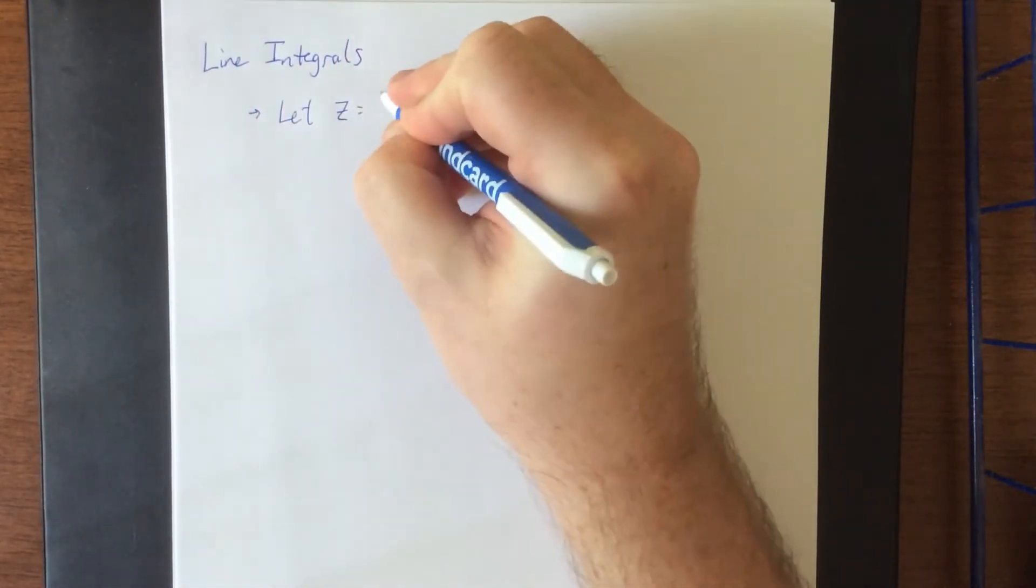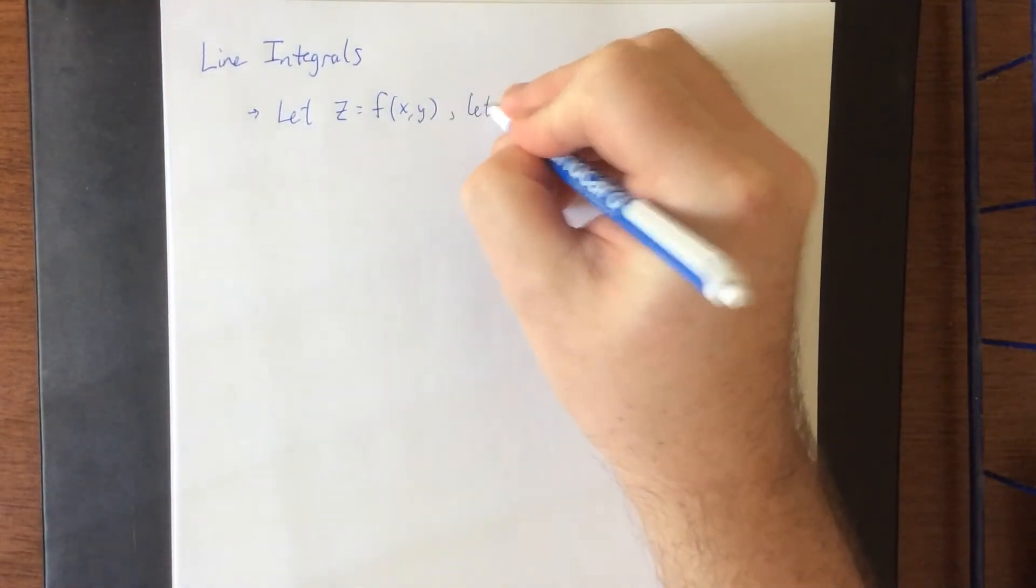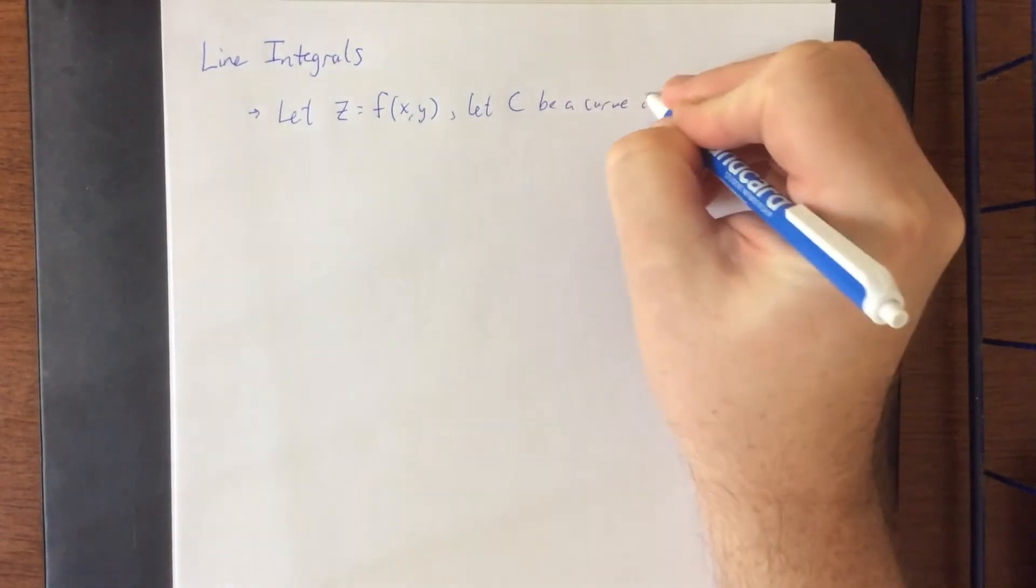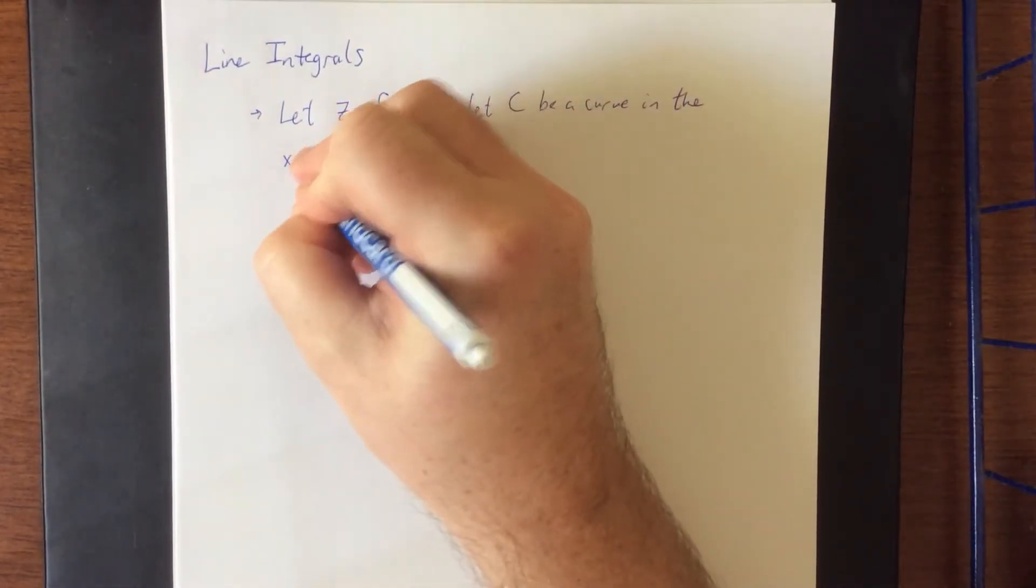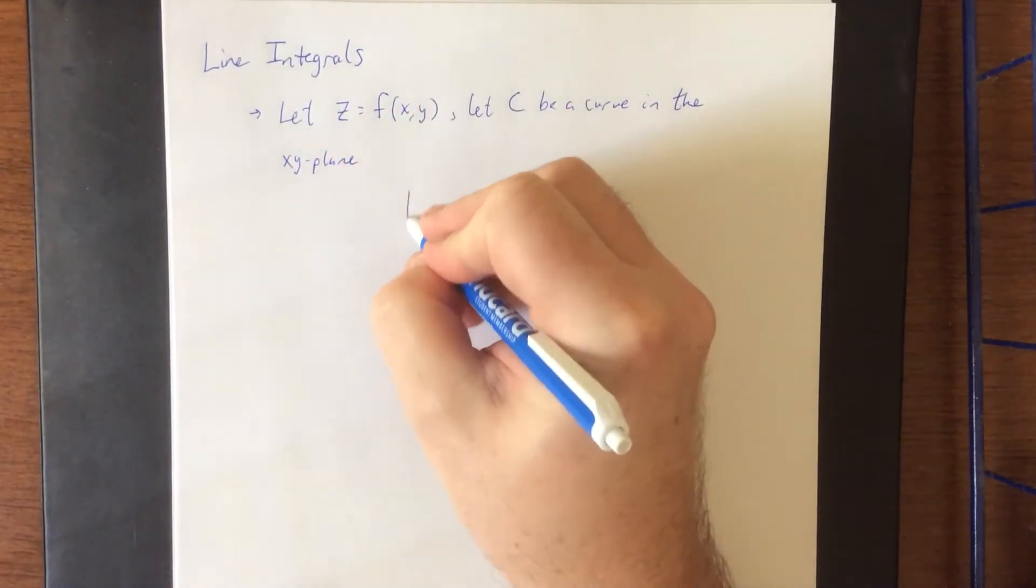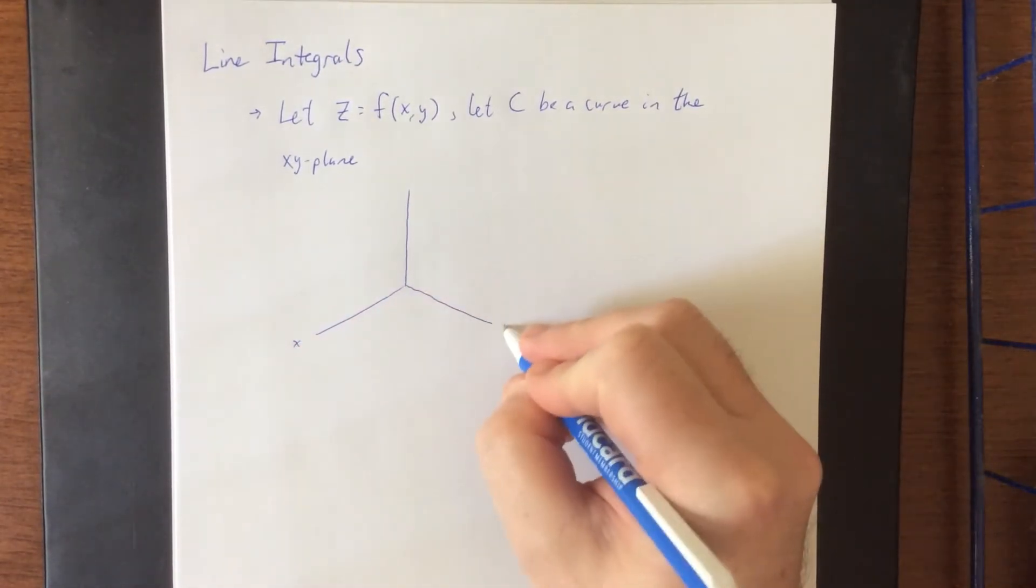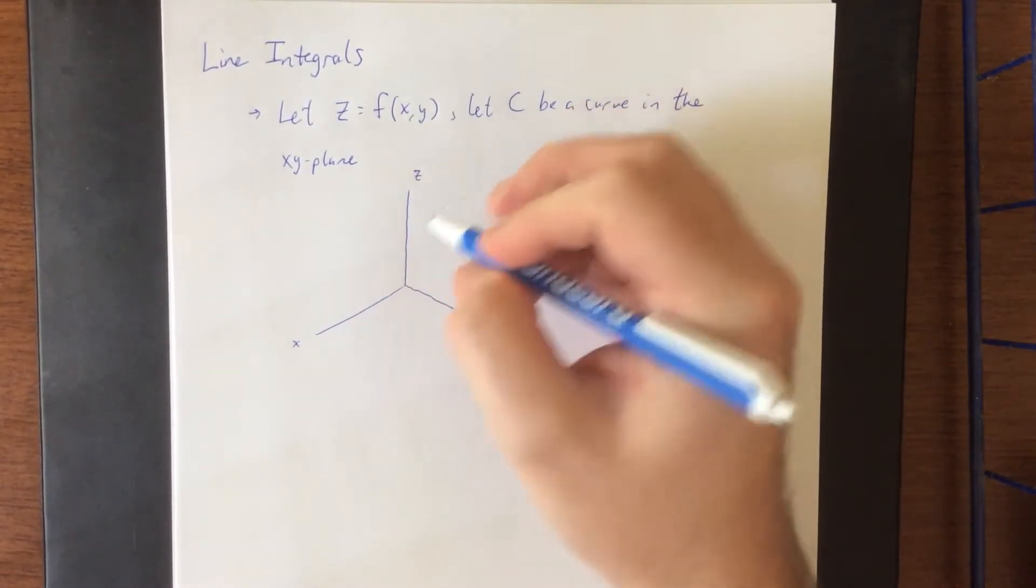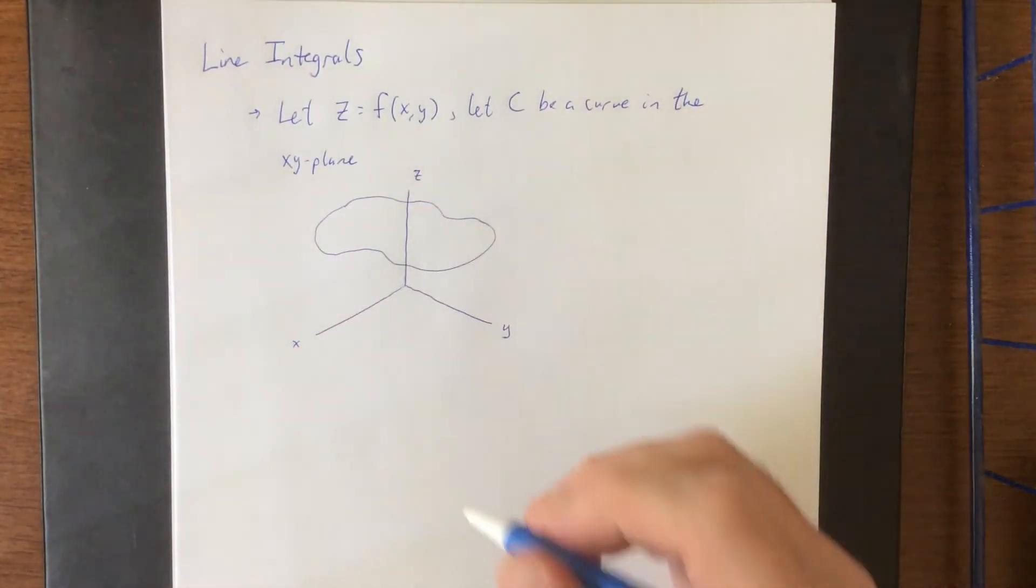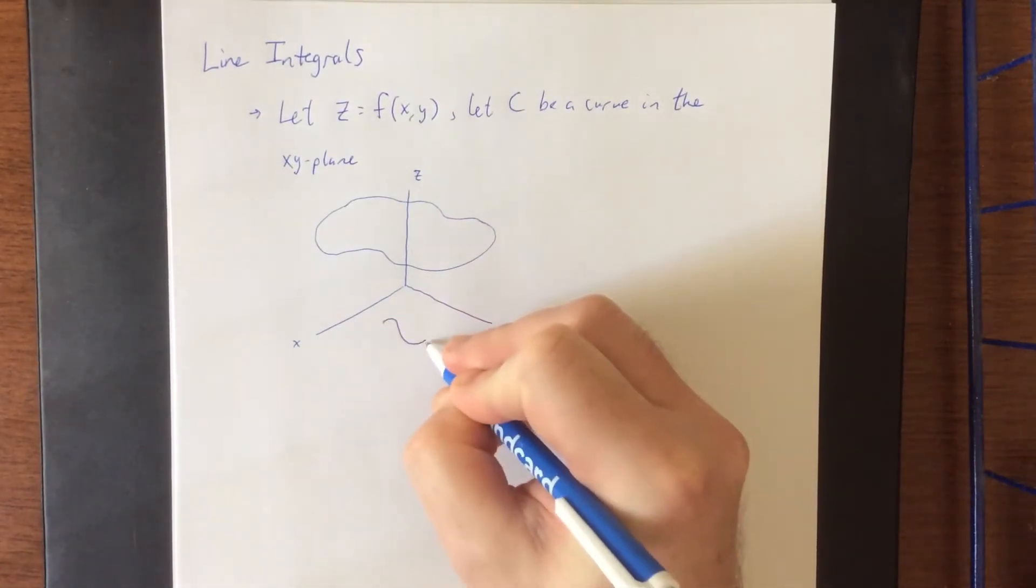Let's consider z being a function of x and y, and let C be a curve in the xy plane. If I were to sketch a picture of what this looks like, suppose that we have some sort of surface that exists up here in three dimensions, and in addition to that, suppose that we have some curve within the xy plane.